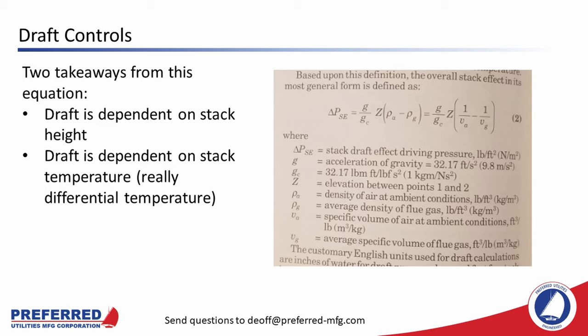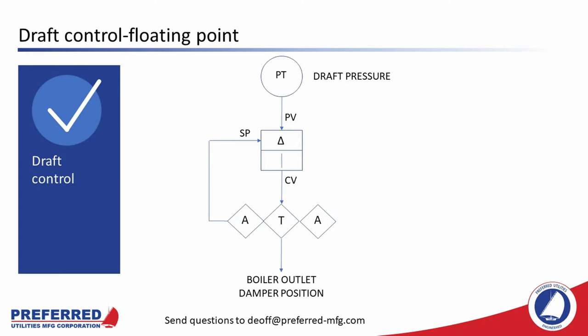The simplest type of draft control is known as floating point control. It utilizes a draft transmitter at the boiler outlet — at the bottom of the stack but above the stack outlet damper. There is one set point for all firing rates, usually just slightly negative, and the outlet damper is positioned to maintain the draft set point. Control is proportional only, with a dead band where no corrective action is taken if the draft is close to set point — this reduces boiler outlet damper hunting. Essentially, with floating point draft control, close is good enough.